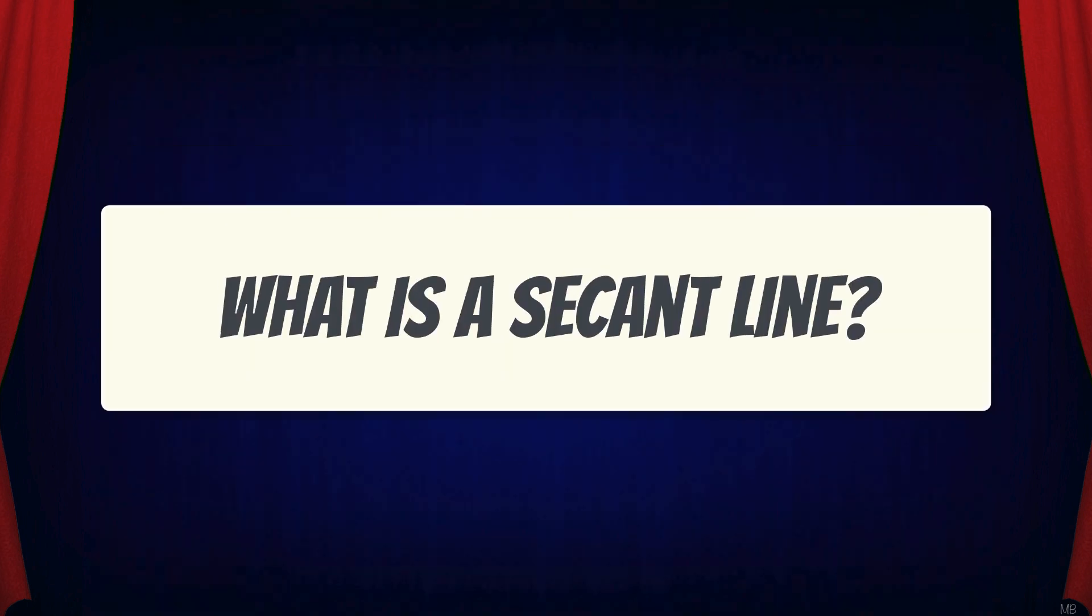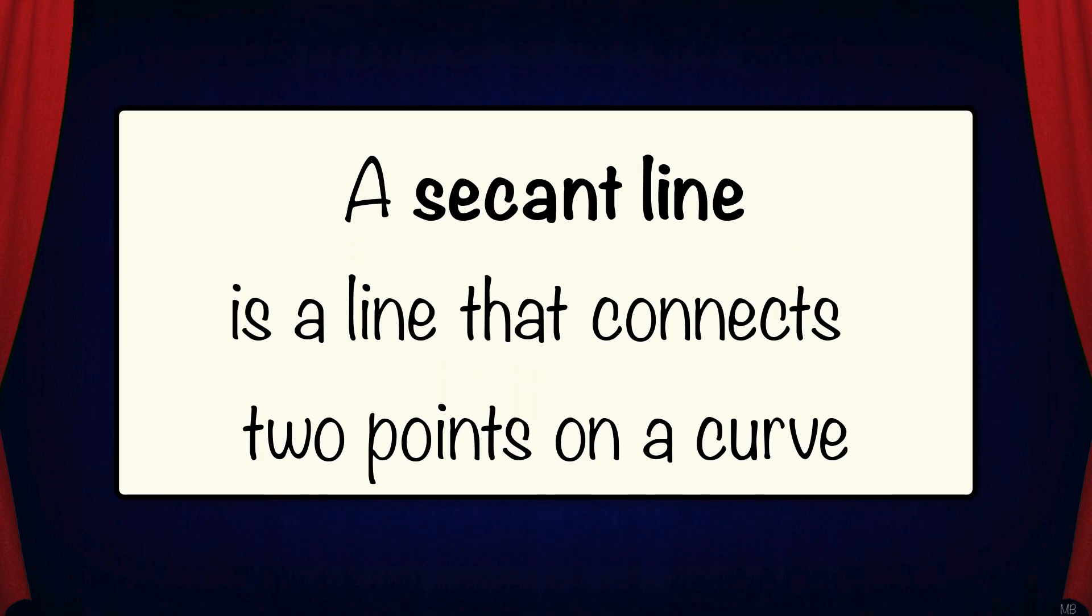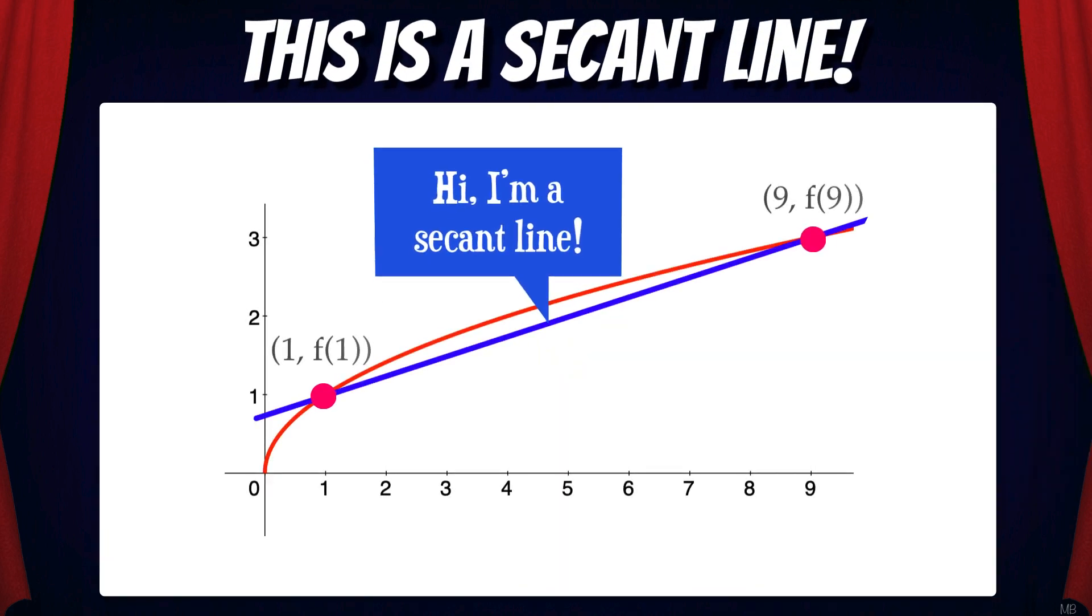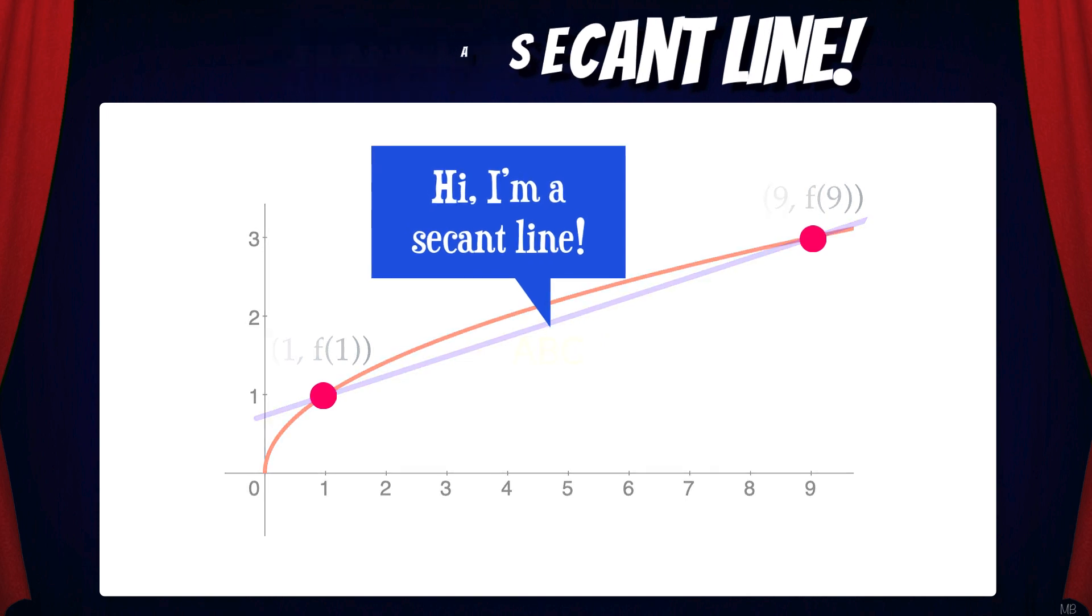But what is a secant line? A secant line is a line that connects two points on a curve. Here's an example of a secant line that passes through the points (1, f(1)) and (9, f(9)) on the red function.